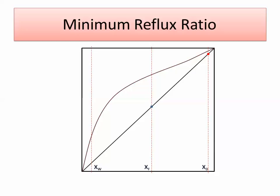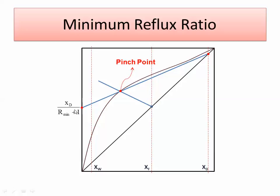You need to know the reflux ratio R. To get it, calculate the minimum reflux ratio R_min: find the pinch point, which is the intersection of the q-line and the equilibrium curve, then connect this pinch point with (xd, xd). That gives you xd over (1 + R_min). The actual R is R_min multiplied by 1.2 or 1.3, depending on the problem.